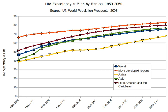Mathematically, life expectancy is the mean number of years of life remaining at a given age, assuming age-specific mortality rates remain at their most recently measured levels. It is denoted by e_x, which means the mean number of subsequent years of life for someone now aged x, according to a particular mortality experience.